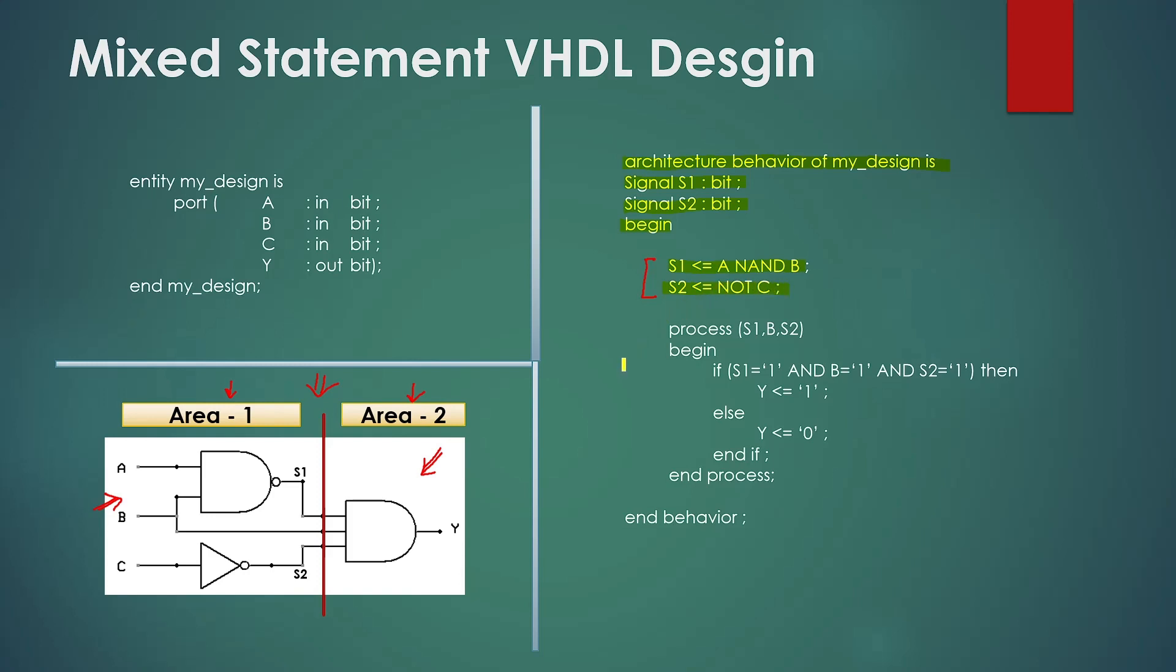Now type the process for sequential statements. Type process, then in the bracket type S1 comma B comma S2 bracket close, which are our inputs for this process. Type begin and write the conditional statement.